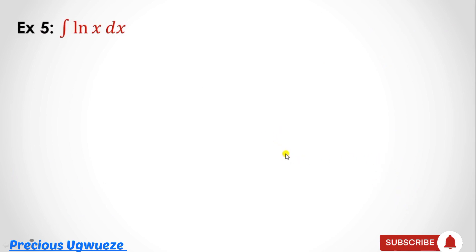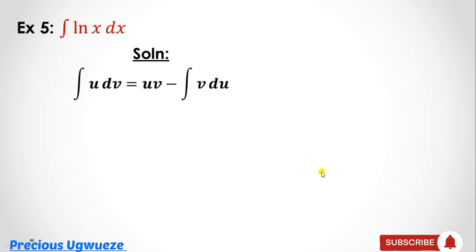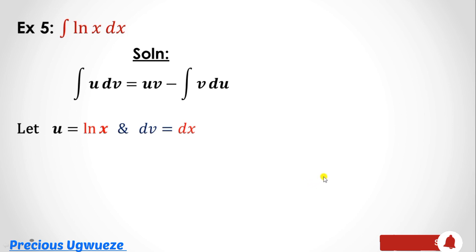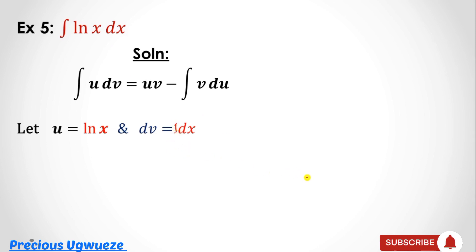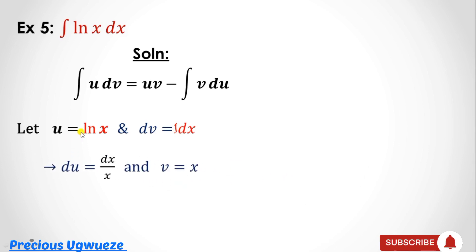Finally, let's look at how to integrate a logarithmic function. If you are asked to integrate ln(x), it can seem tricky. Choose u = ln(x). What is left for dv? Only dx remains, and there is an invisible 1 attached, so dv = 1·dx.